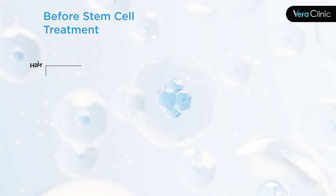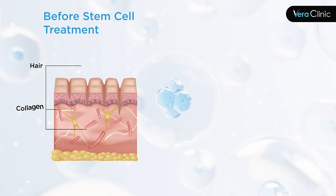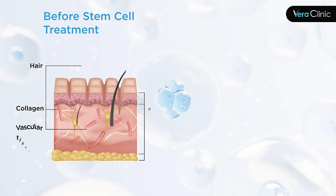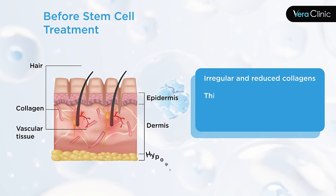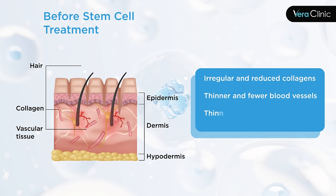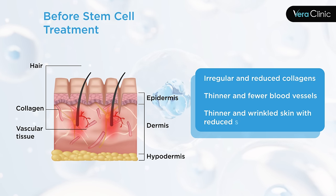Before Stem Cell Treatment: Irregular and reduced collagens, thinner and fewer blood vessels, thinner and wrinkled skin with reduced subcutaneous fat.